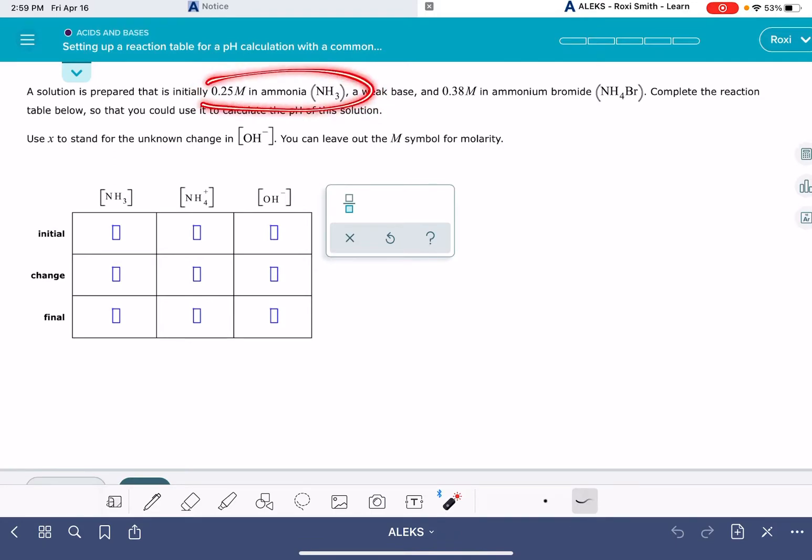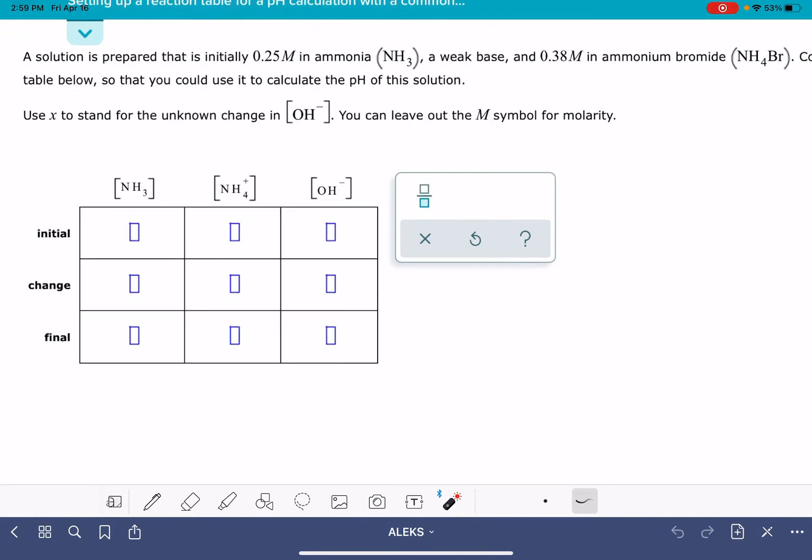So, for example, we have 0.25 molar ammonia, NH3. That's what we're going to put in this box right here, 0.25.